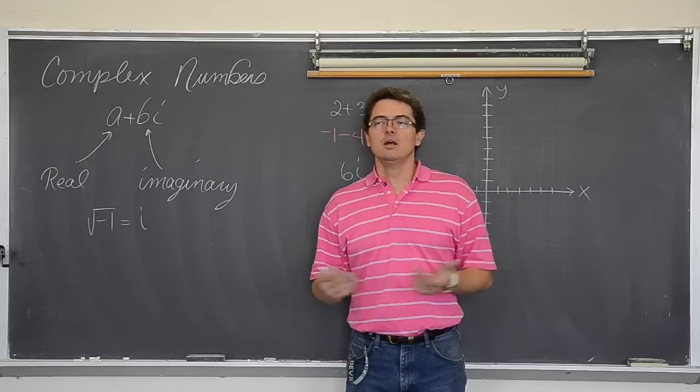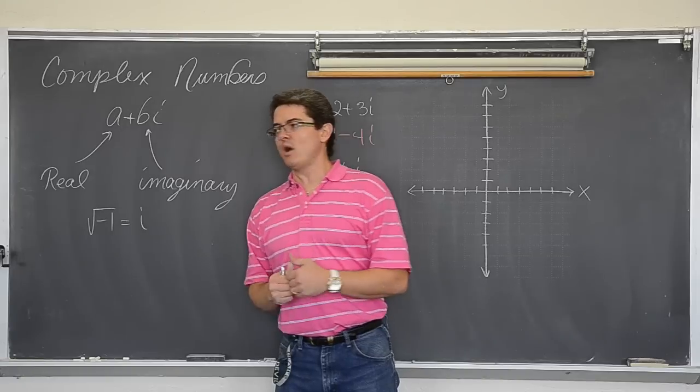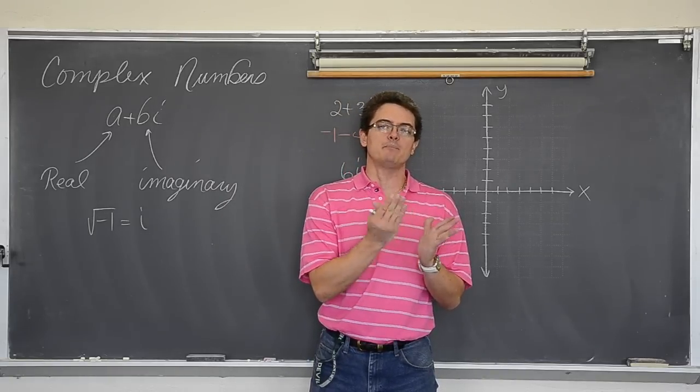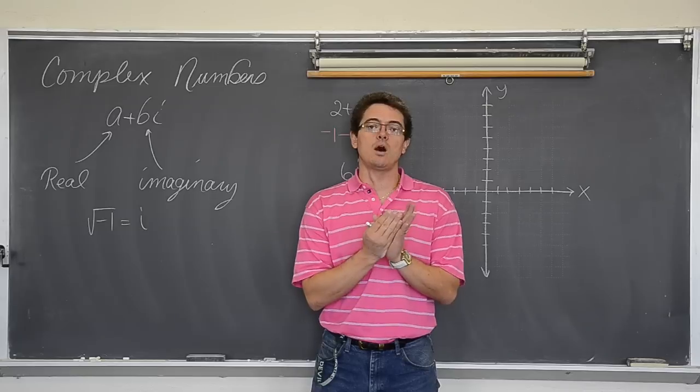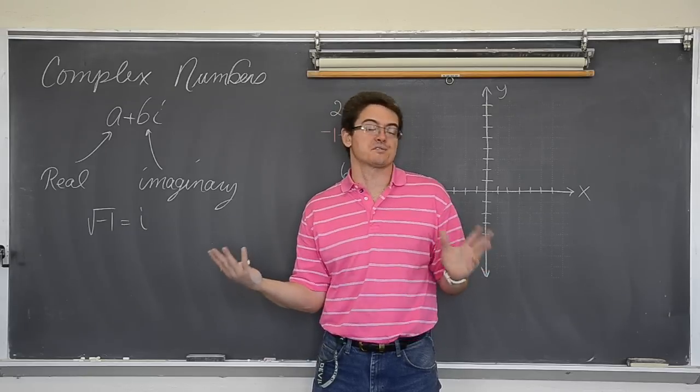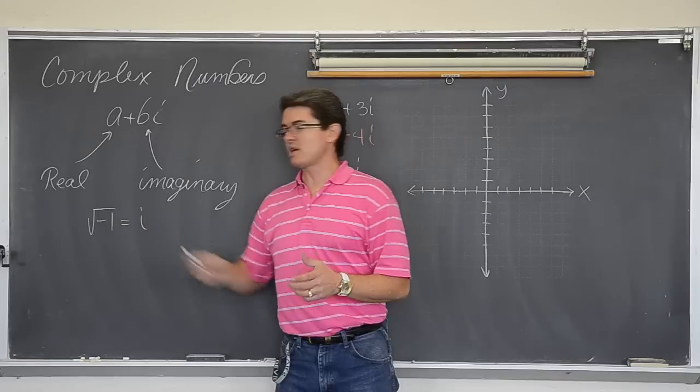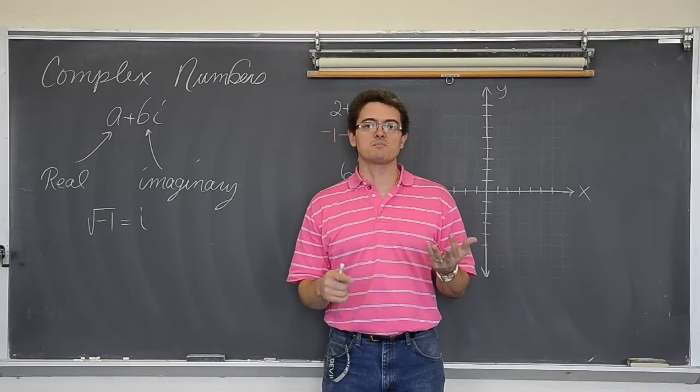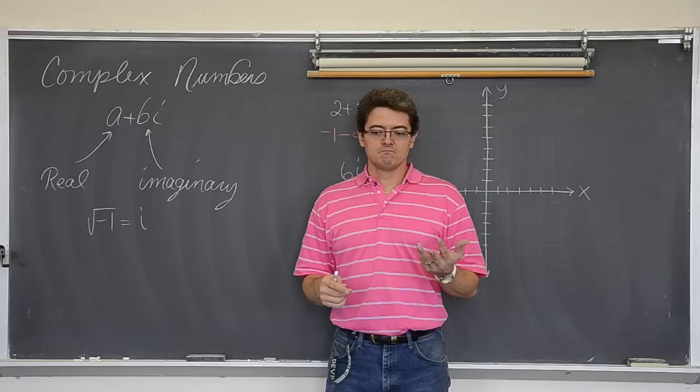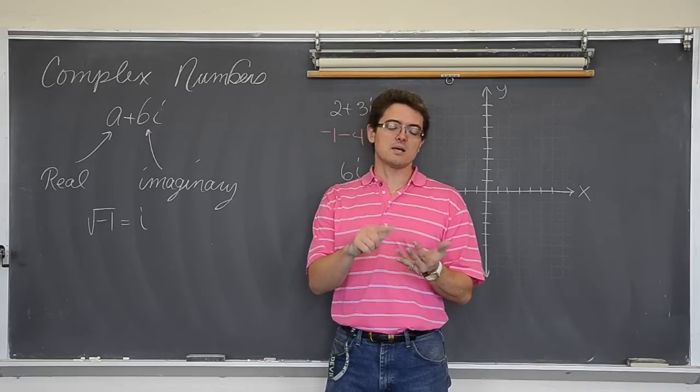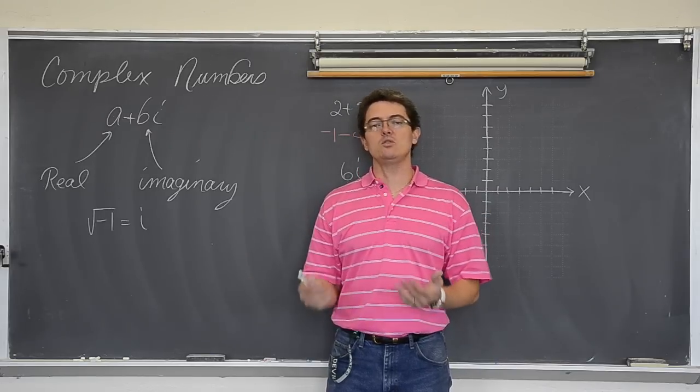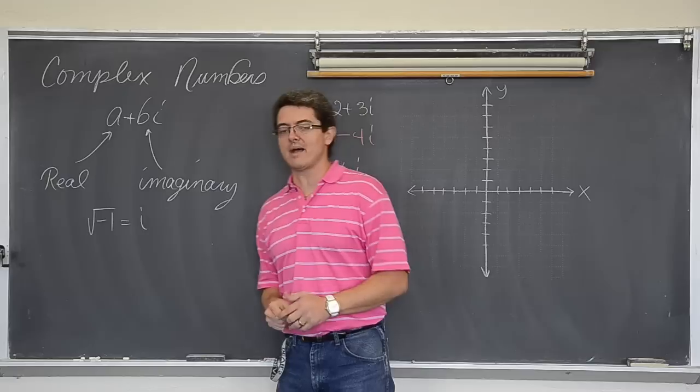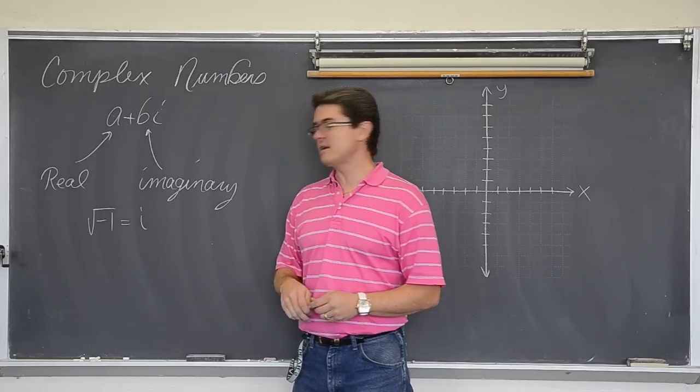Now why is it imaginary? Because if you square root negative one, or you try and come up with a square root, there are not two numbers that you can multiply by themselves to give you negative one. Like the square root of four is two because two times two is four. But what two numbers can you multiply together to give you negative one? They don't exist. Negative one times negative one is positive one. One times one is still positive one. You cannot take the even root of a negative number. So we must give it this imaginary identity of i.